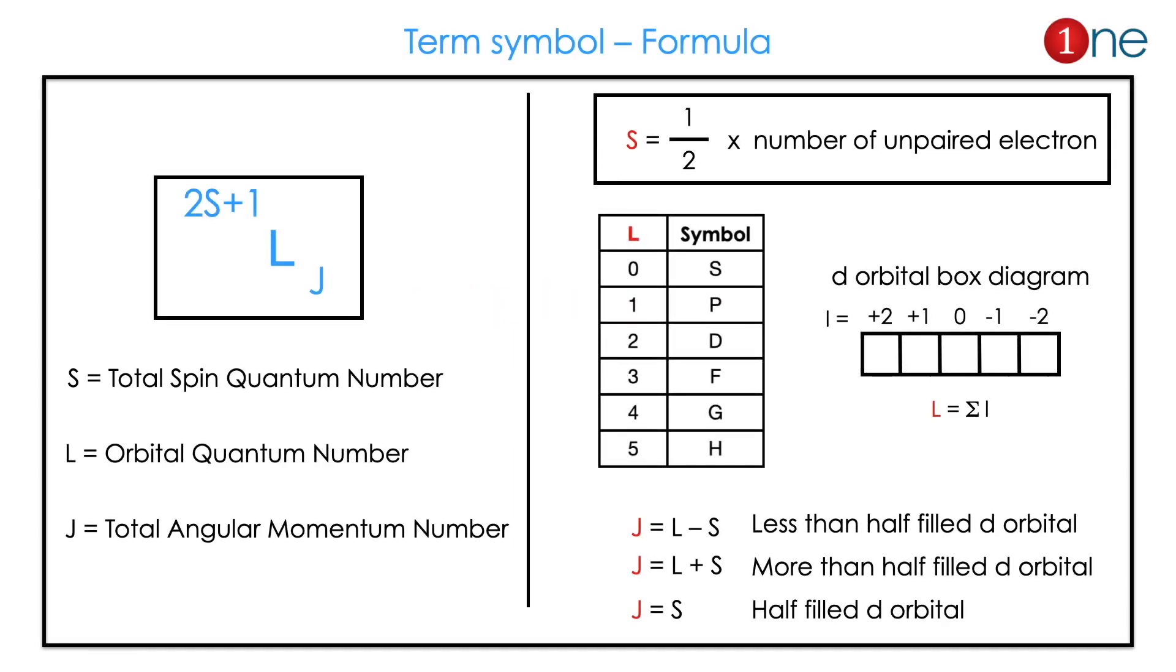The formula is 2S+1 with L as subscript and J as superscript. Where S is the total spin, L is the orbital quantum number, and J is the angular momentum number.